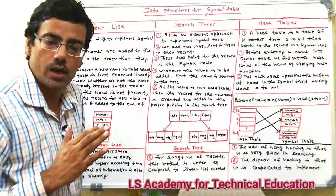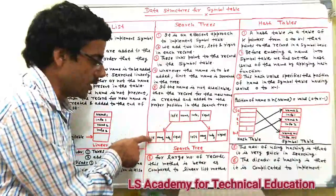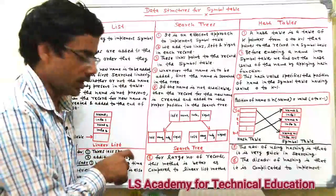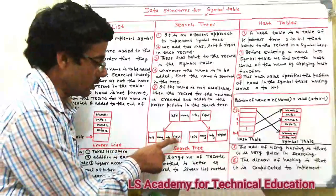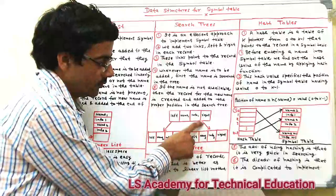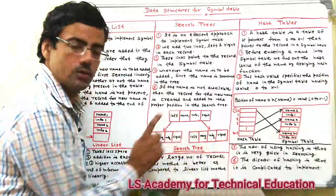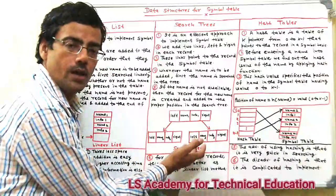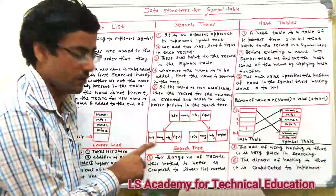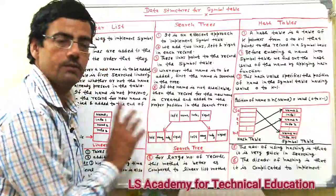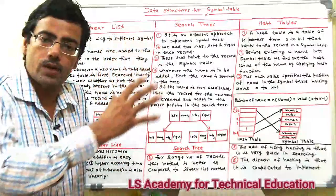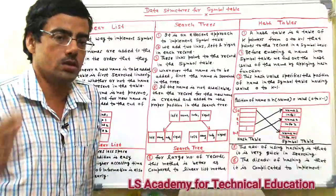Each node has a value along with left and right child pointers. For example, node one has name1 and info1 with left and right links; node two has name2 and info2; node three has name3 and info3. A lesser value goes to the left child and a greater value goes to the right child.